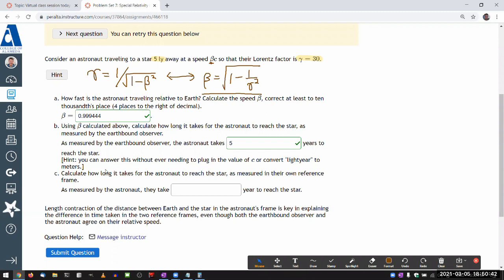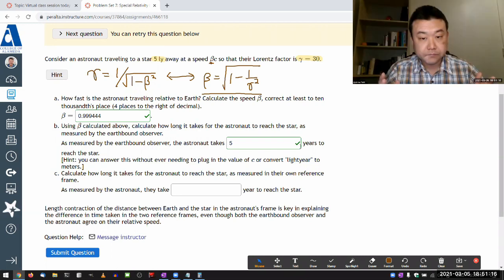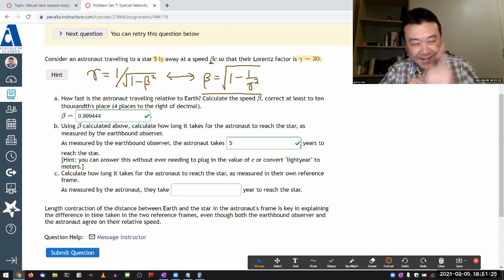And it asks, for part C, calculate how long it takes for the astronaut to reach the star as measured in their own reference frame. And this is where it's useful to remember that moving clocks are slow. So you can think of this five-year timer as a timer that's on Earth. And the Earth clock is moving in the reference frame of the astronaut. So the Earth clock that's... Wait. No, no, wait. I'm doing it wrong. Sorry. I was about to make a mistake. I'm not going to make this mistake.